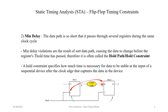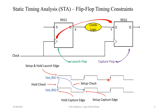This is also called the hold constraint problem. Don't get confused between hold constraints and min delay constraints — they are the same thing, used interchangeably. A hold constraint specifies how much time is necessary for data to be stable at the input of a sequential device after the clock edge that captures the data. Now let's see the min delay and max delay constraints in more detail in the next slides.